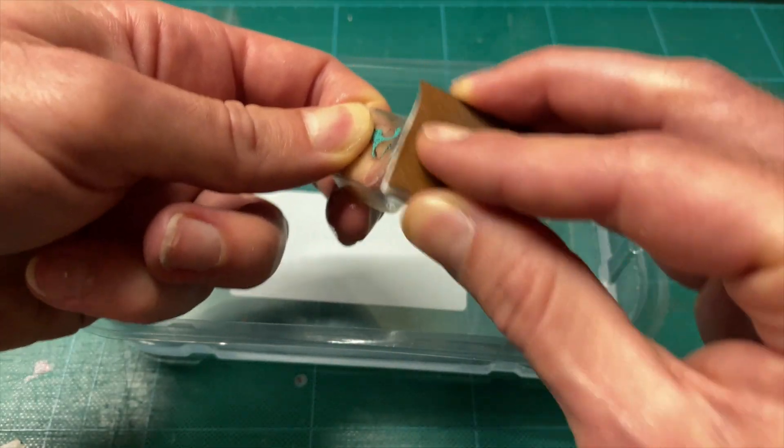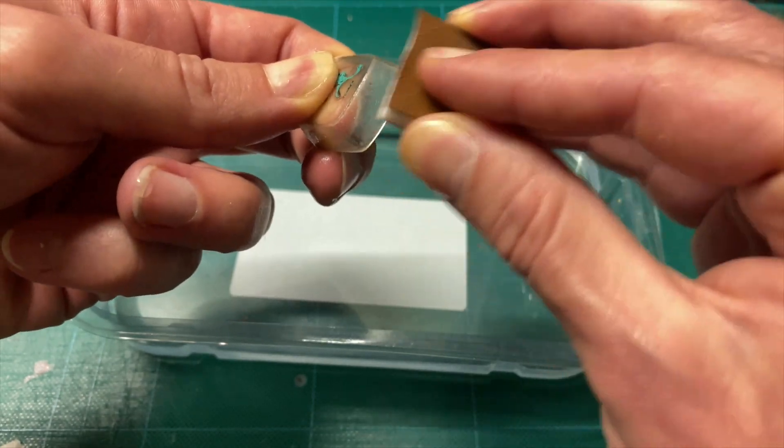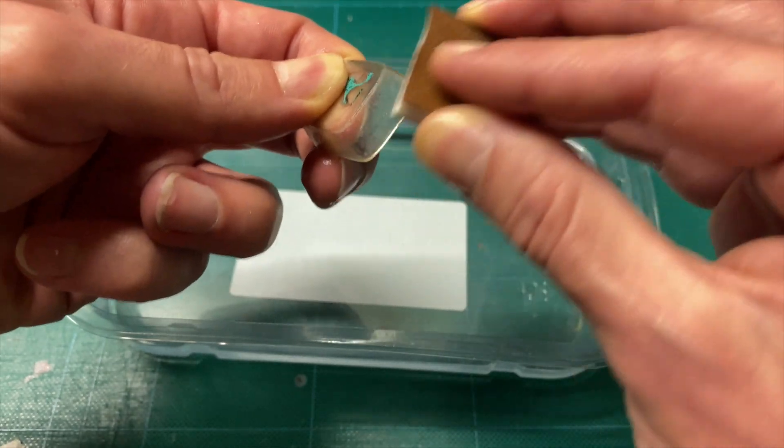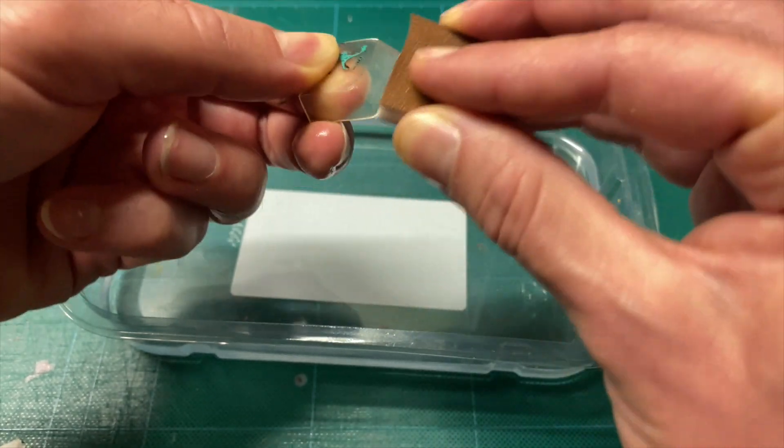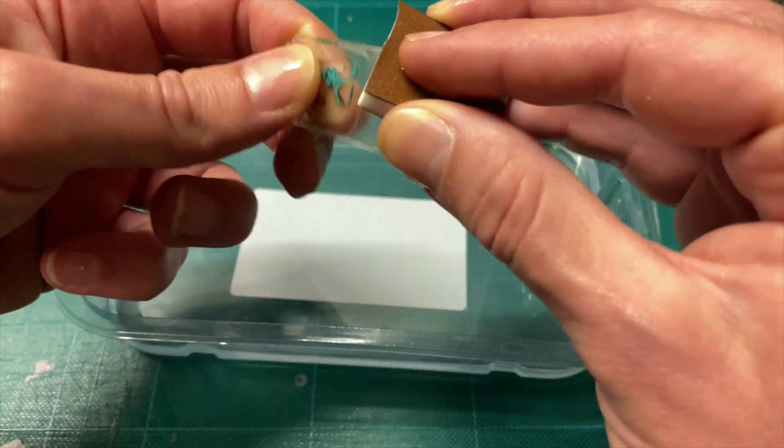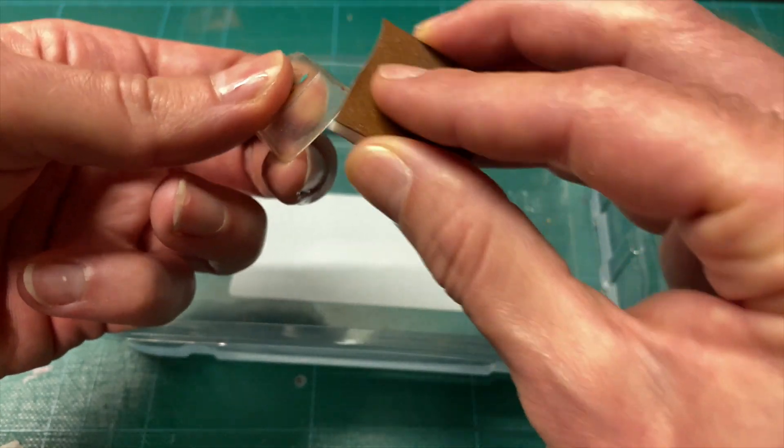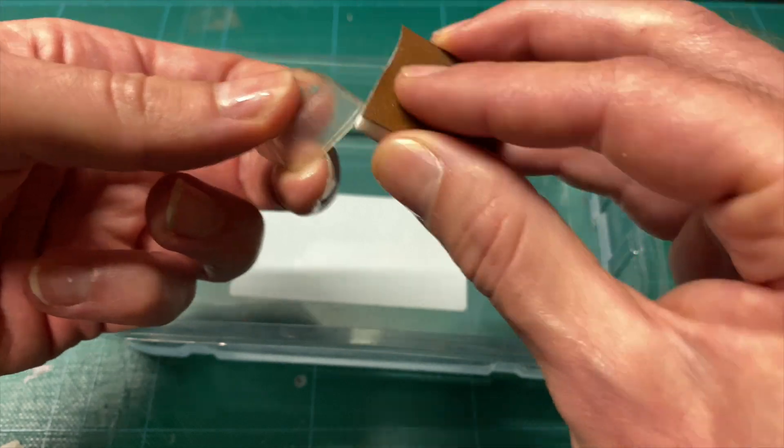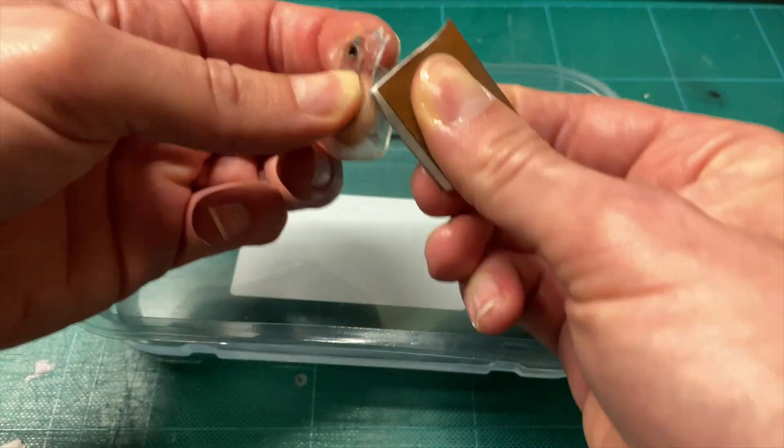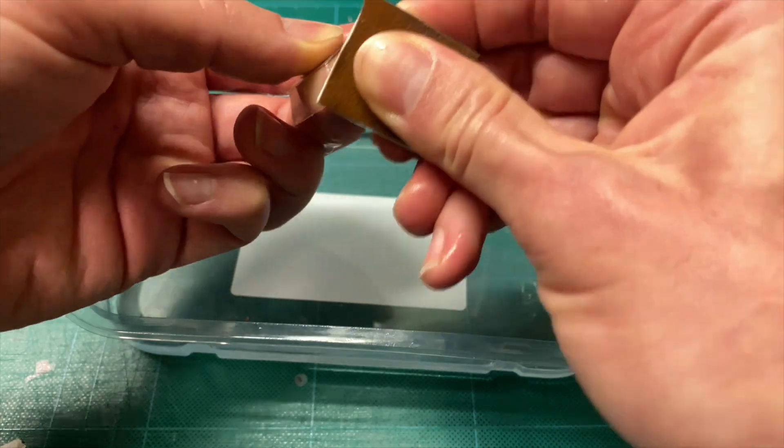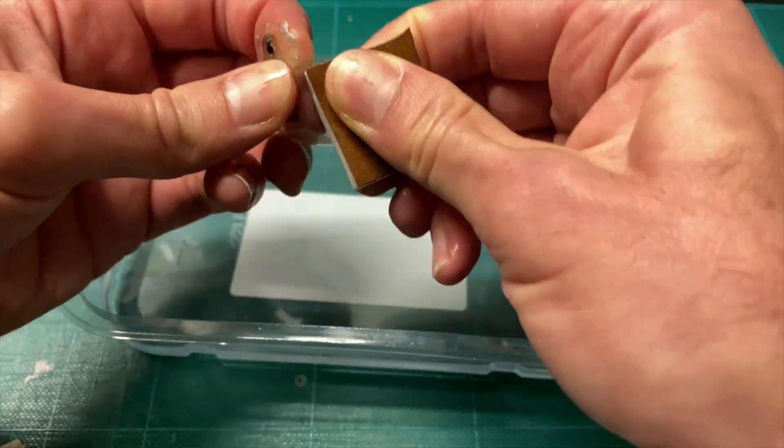Avoid making the same sanding movement for a long time as this will create deeper scratches. Also make sure to adjust your pressure on the corners of the window unit. The less surface you are sanding the more pressure goes to that small surface you're working on. If you've sanded a painted model in between layers before you probably found this out the hard way already. I know I did.